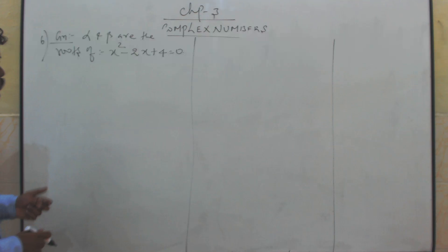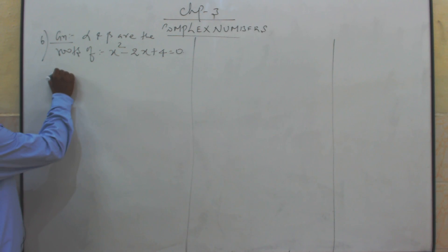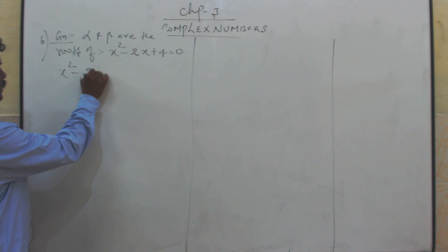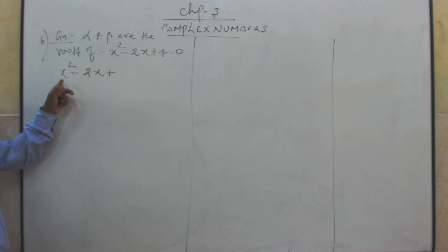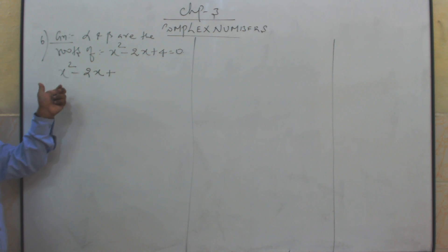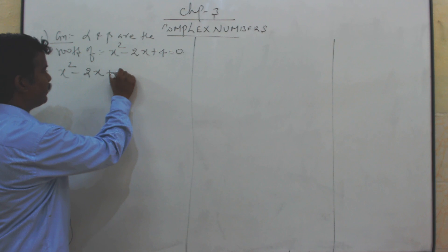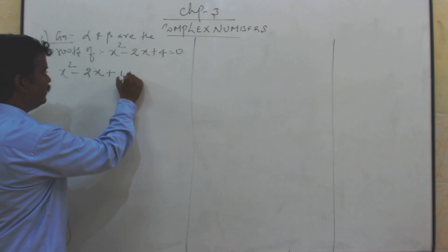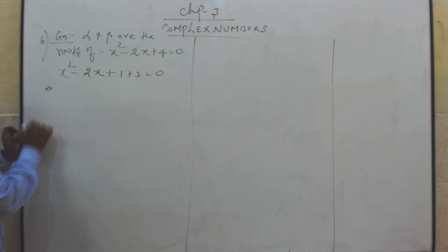We are going to solve this quadratic equation and find out what alpha and beta are. So expanding x(x+1) + 4 = 0 gives x squared minus 2x plus x, leading to x squared minus 2x is equal to 0. Then in the plus 4, you write plus 1 plus 3.